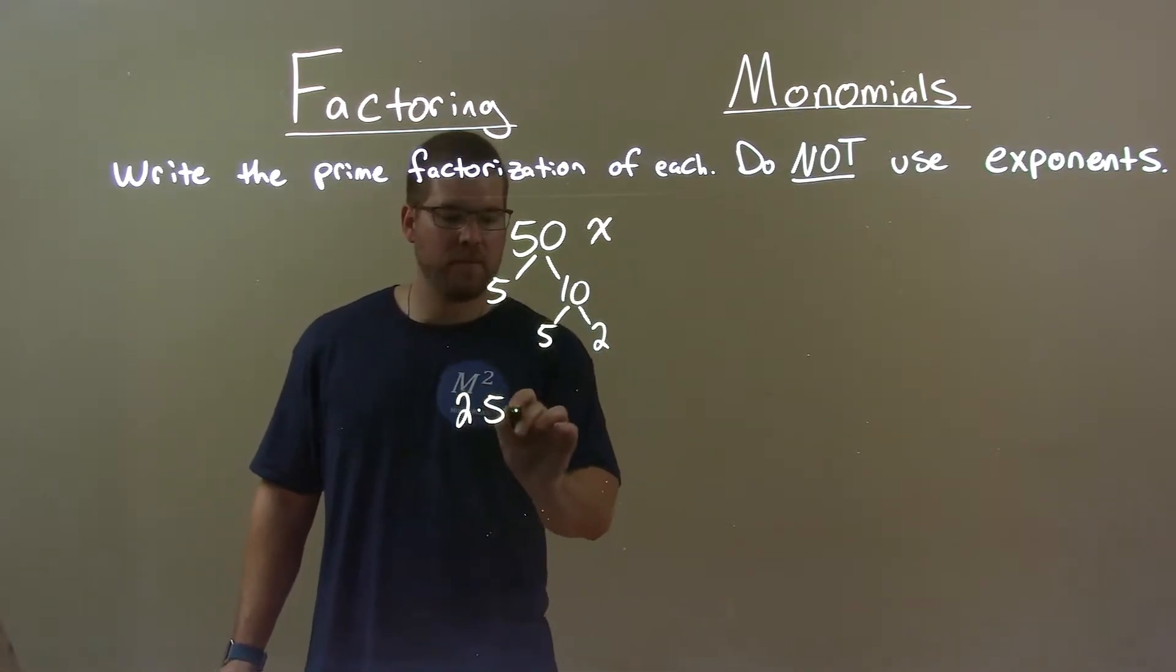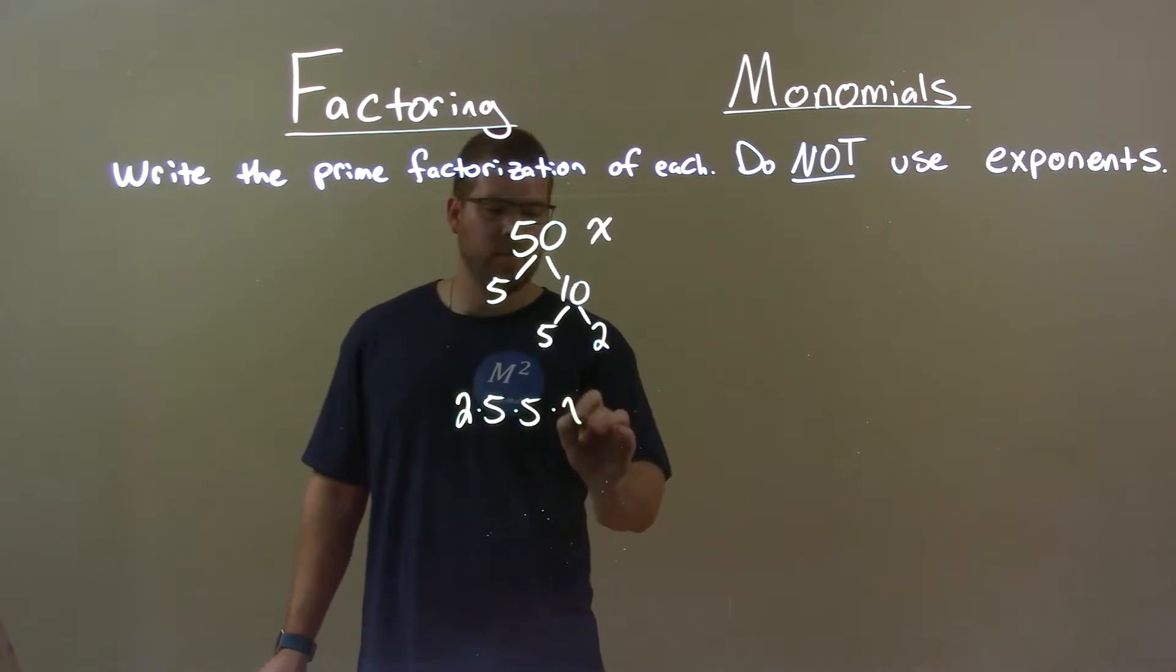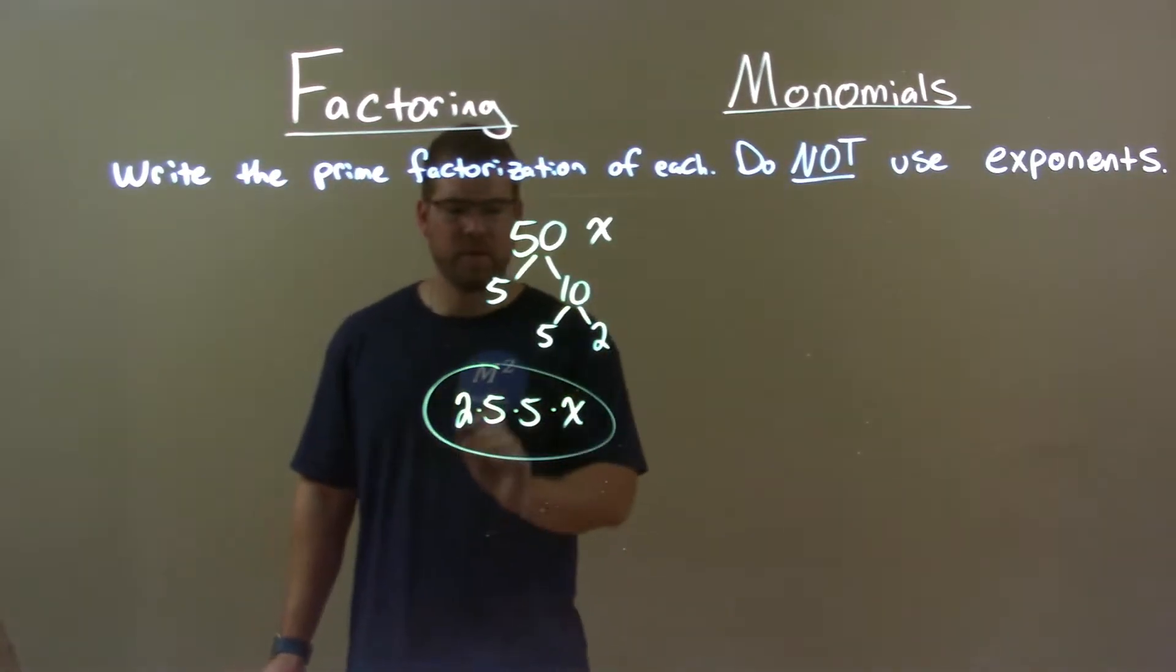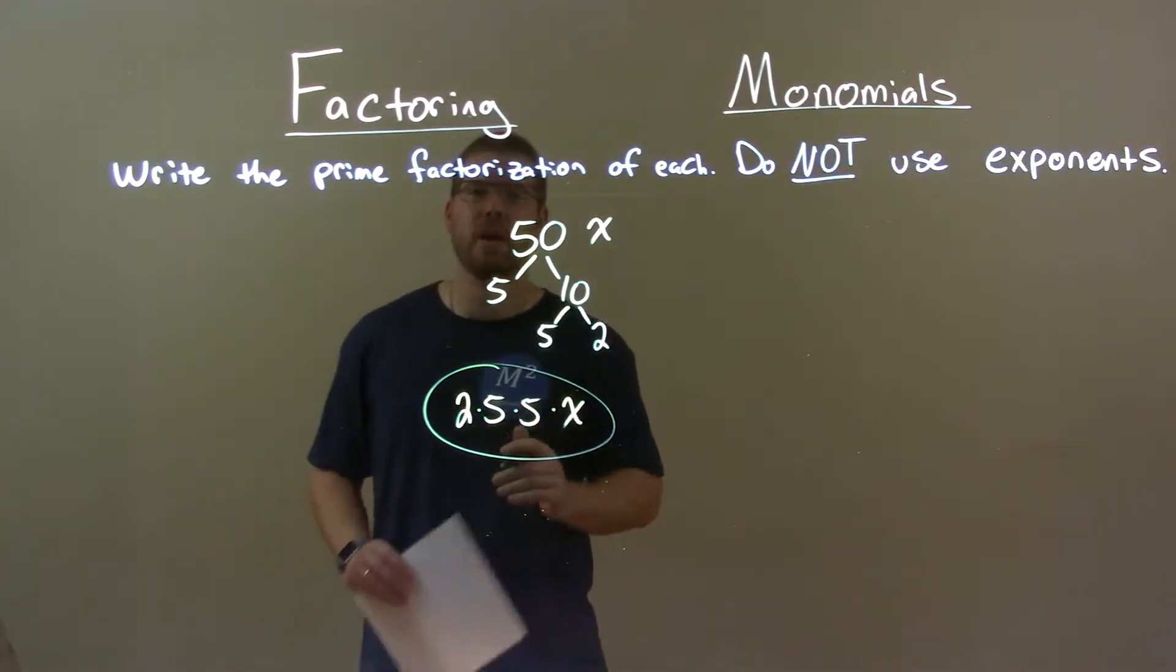2 times 5 times 5 gives me the 50, x just comes down, final answer here, 2 times 5 times 5 times x.